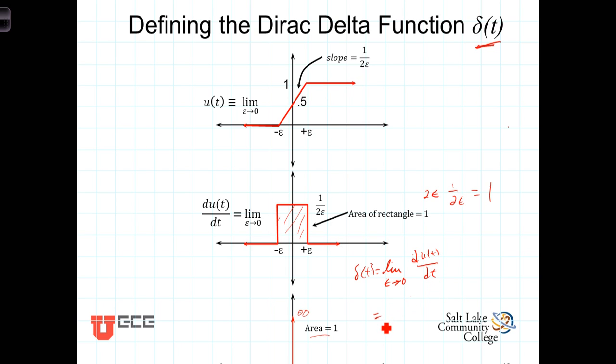We can write it in its piecewise continuous form and say then that the delta of t is equal to zero for t not equal to zero and is equal to infinity for t equals zero.